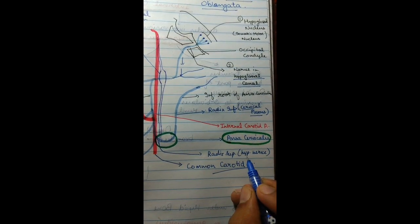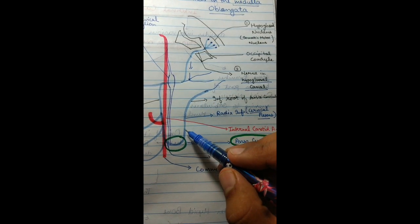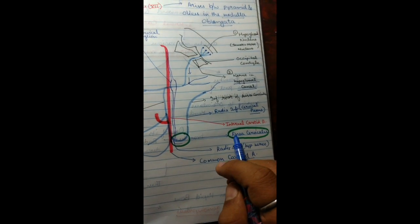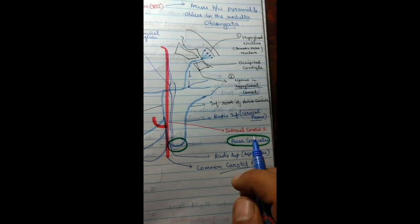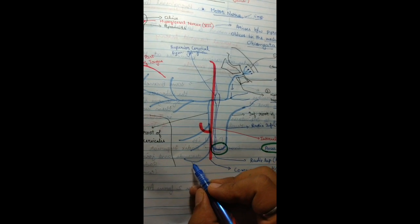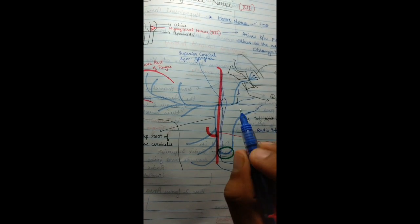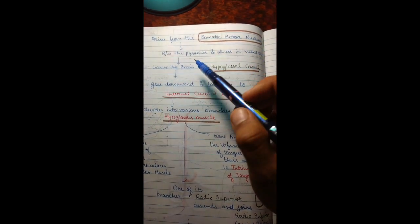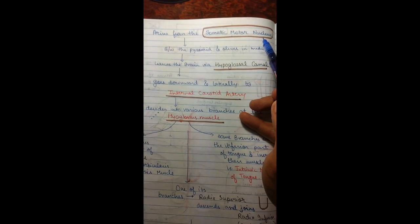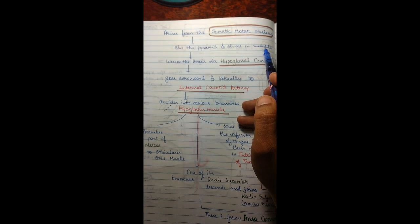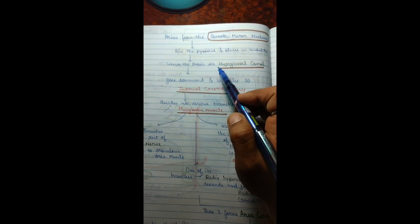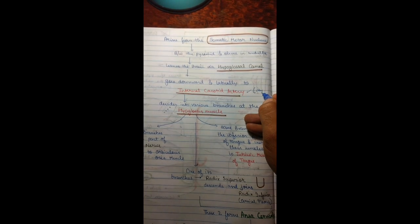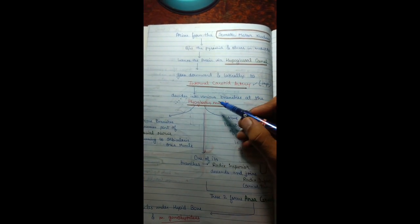The radix superior is given by the hypoglossal nerve, and the radix inferior is given by the cervical plexus (C1, C2, C3). Together, the radix superior and radix inferior form the ansa cervicalis. It is very important to know that ansa cervicalis is formed by both the hypoglossal nerve and the cervical plexus. As shown in the flowchart, the nerve arises from the somatic motor nucleus, leaves the brain via the hypoglossal canal, and goes downwards and laterally to the internal carotid artery.